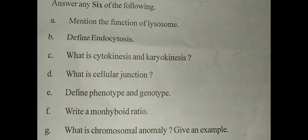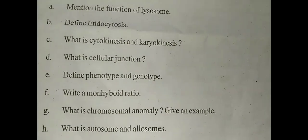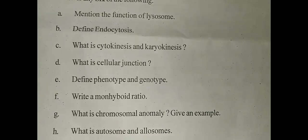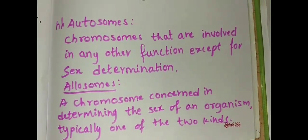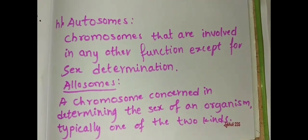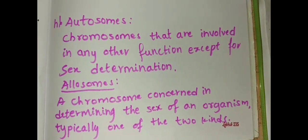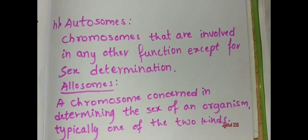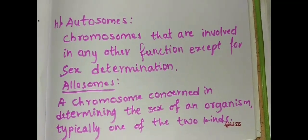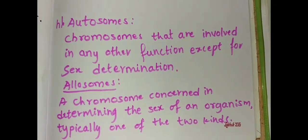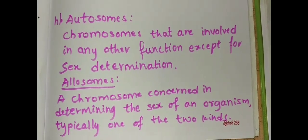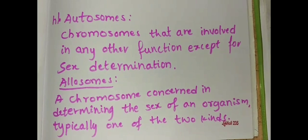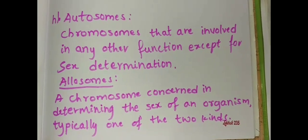The next question is what is autosome and allosomes? Autosomes are chromosomes that are involved in any other function except for sex determination. Allosomes is a chromosome concerned in determining the sex of an organism, typically one of the two kinds either male or female.